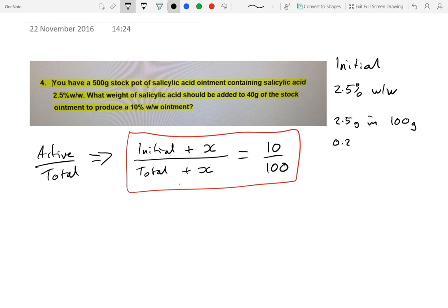I don't know if you're allowed to have a calculator, so I'll divide by 10. That's 0.25 in 10 grams, which means it's 1 gram in 40 grams. So now I know what the initial amount of salicylic acid is in that 40 grams.